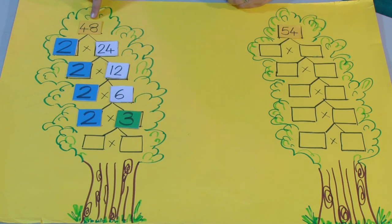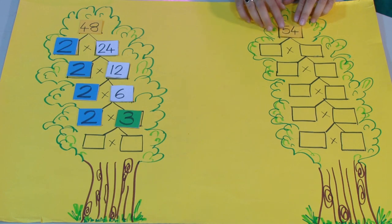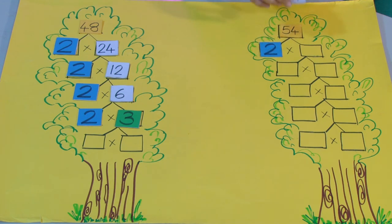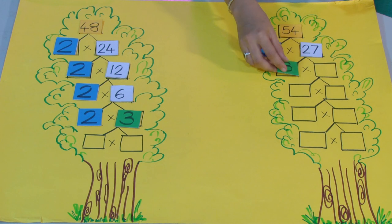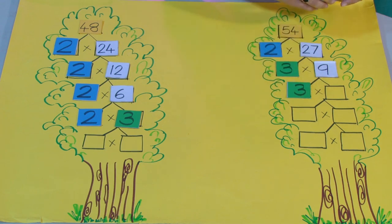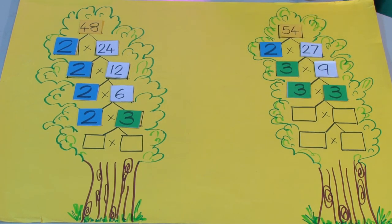The prime factorization of 48 is complete. Now we will factorize 54. We begin with the smallest prime number — since 54 is also an even number, 2 into 27. 27 we further factorize as 3 into 9, and 9 we further factorize as 3 into 3. So the prime factorization of 54 is also complete.